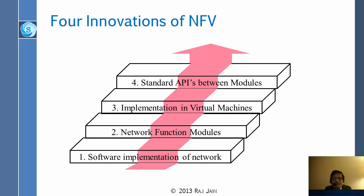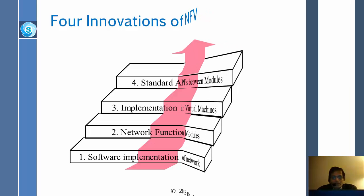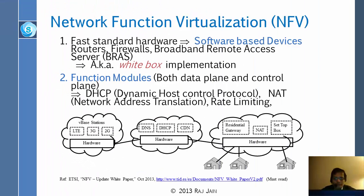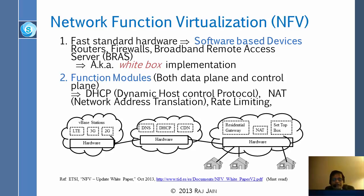The first thing people realized when they started discussing SDN was that once we have SDN and OpenFlow, you won't need any specialized hardware. You can do everything on a standard PC. Some carriers got together and said, why do we need specialized hardware? We can just do everything in software — implement routers, firewalls, broadband access servers, anything on a standard PC.